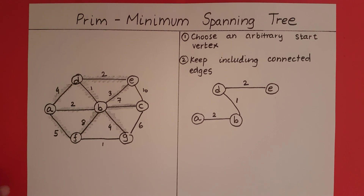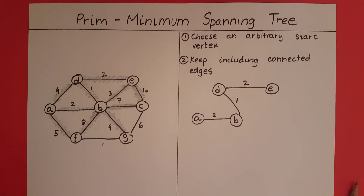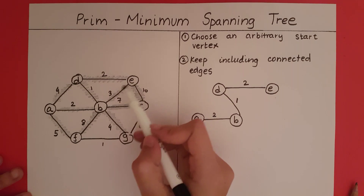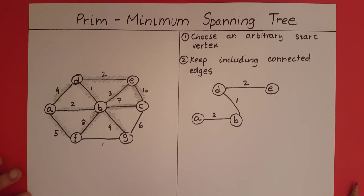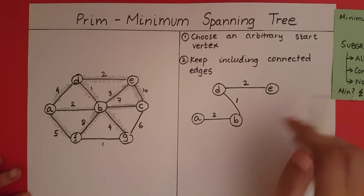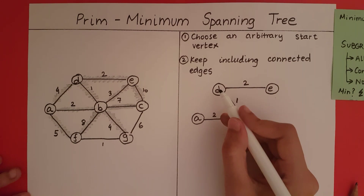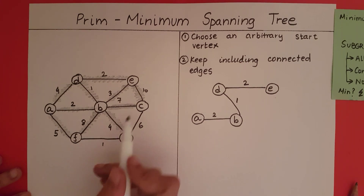Now that we have included E, let's see the connected edges. Out of these shaded edges, we want to pick the one not yet included with minimum distance. We see an edge of weight 3 here, but can we add it? No — because in our minimum spanning tree we do not want any cycles. Adding the edge of 3 would create a cycle between B, D, and E, so we cannot add it.